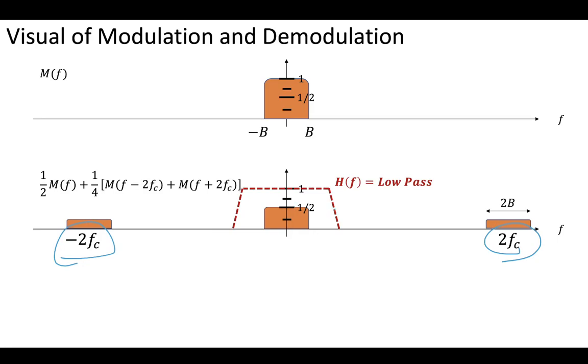In the demodulation process, we first multiply by that cosine wave. That forced these other components way out to these plus and minus 2Fc frequency bands. Then at our receiver, as part of the demodulation process, we apply a low-pass filter, and we should be able to recover our original message.